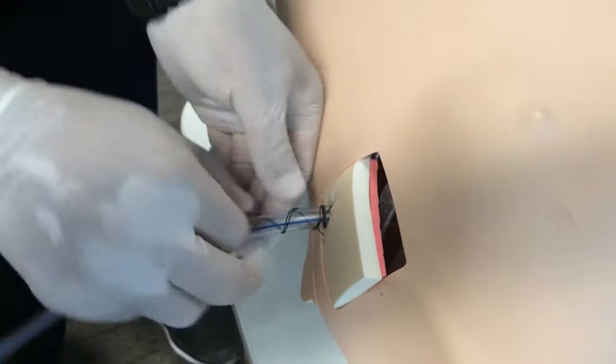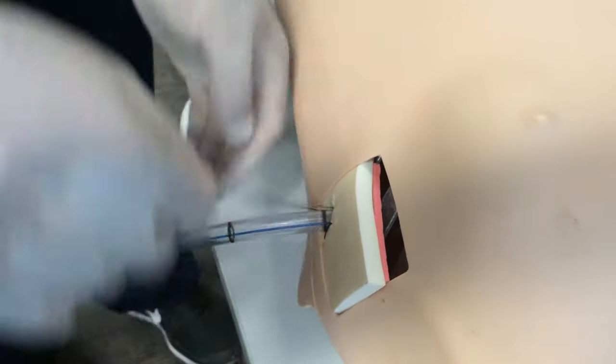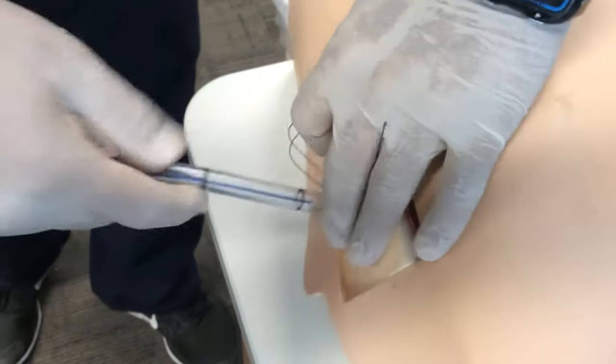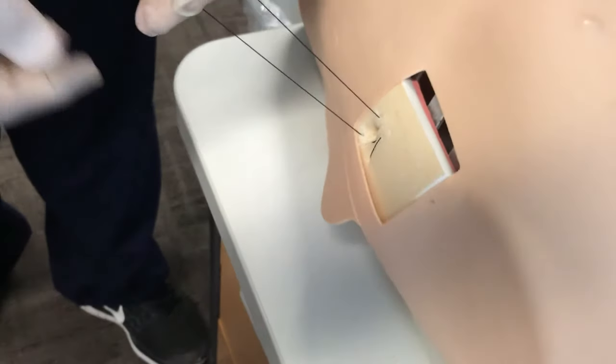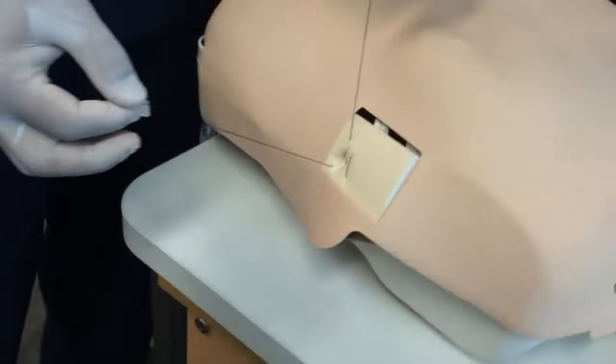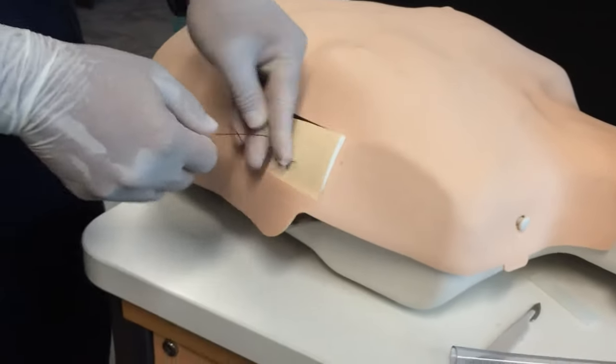So drain comes out. You've already cut the knot. That leaves you with the suture you originally placed in. Close the wound up.